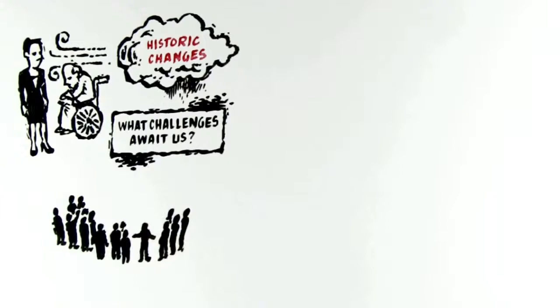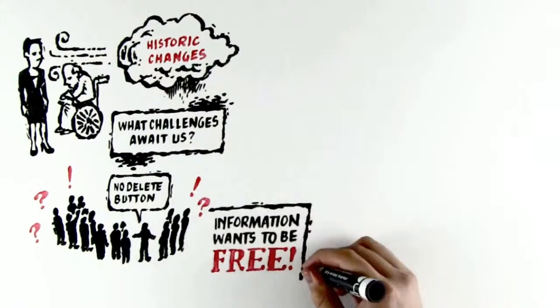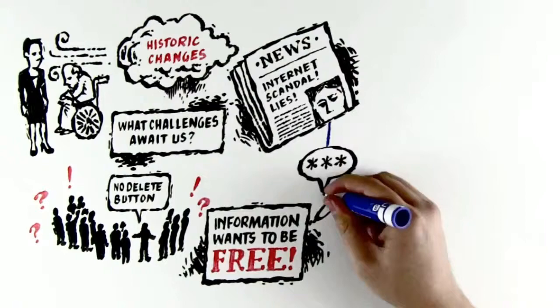What challenges await us? For democratic and autocratic societies alike, the absence of a delete button on the internet will be one of the great intractable challenges of our future. Information wants to be free, as the saying goes. So as another saying goes, don't write anything down you don't want read back to you in court, or printed on the front page of a newspaper.